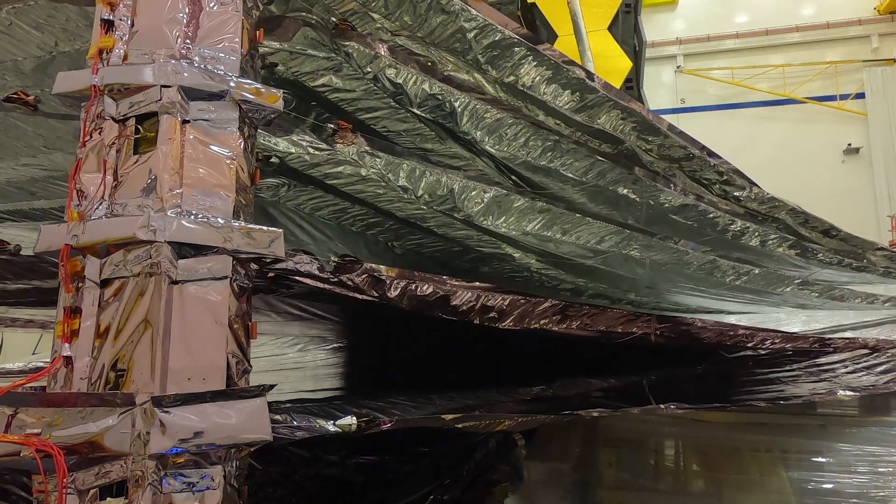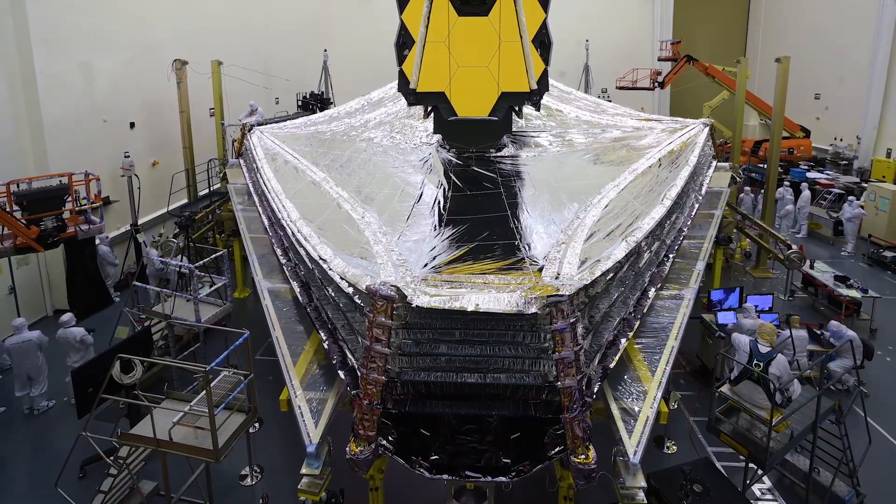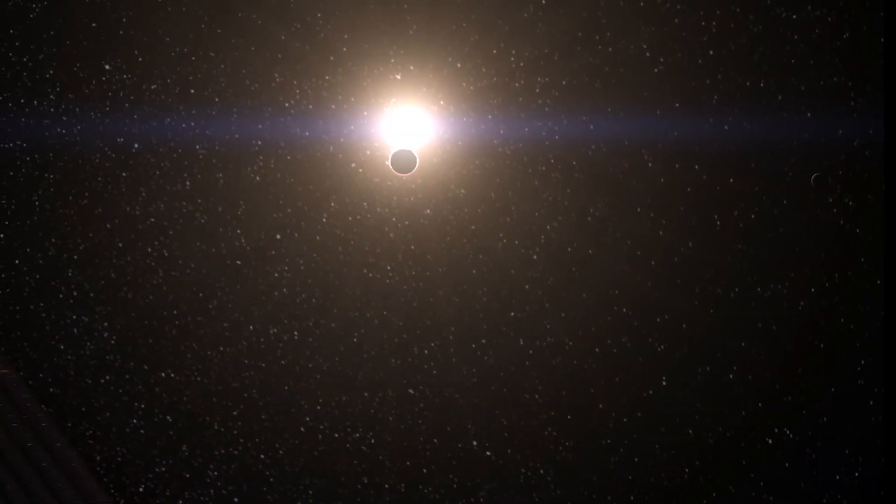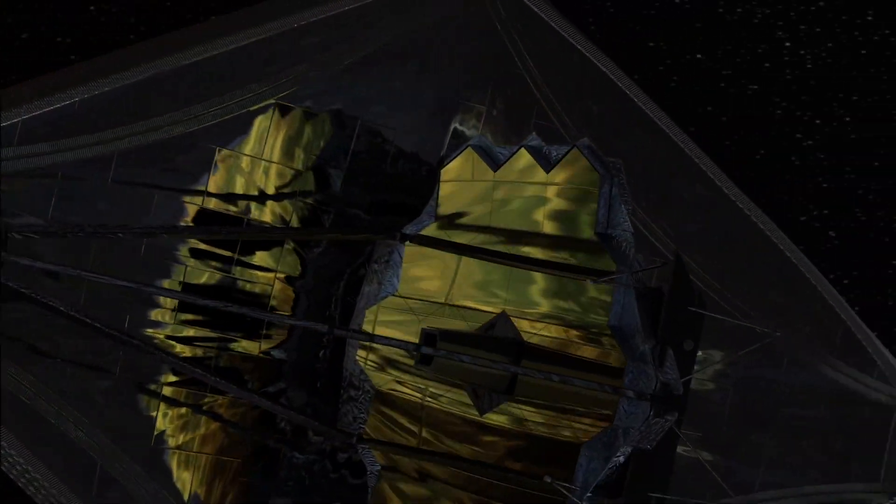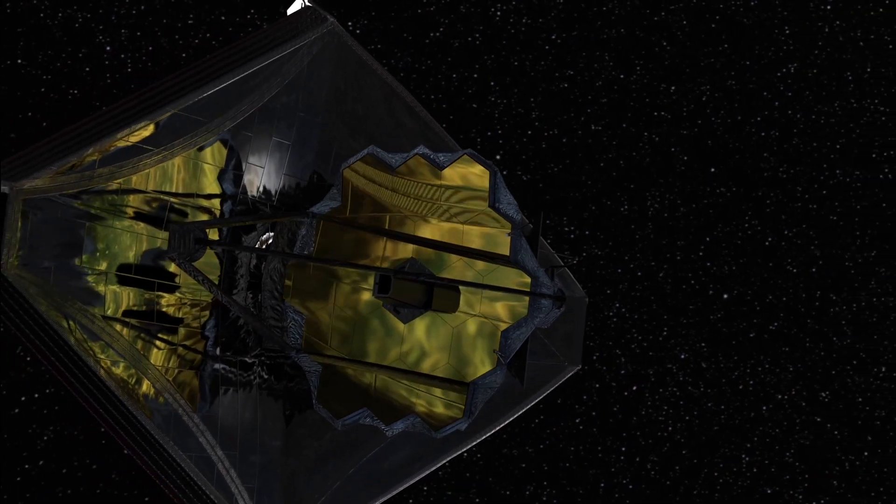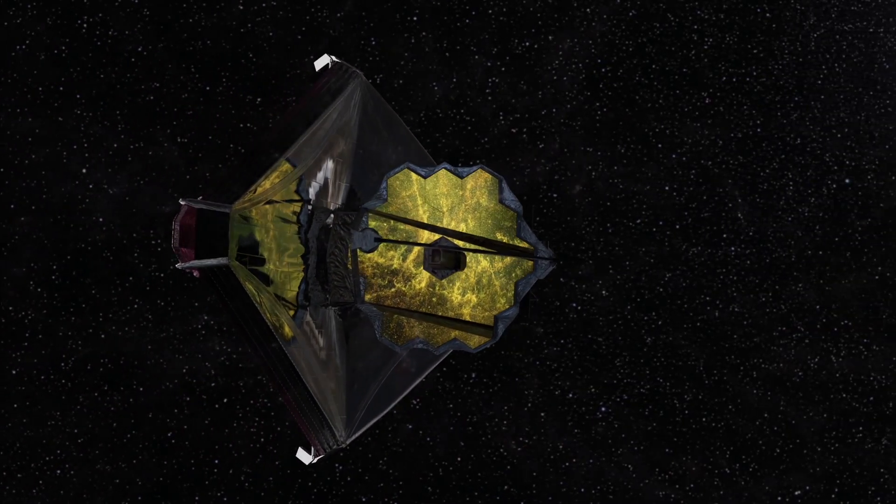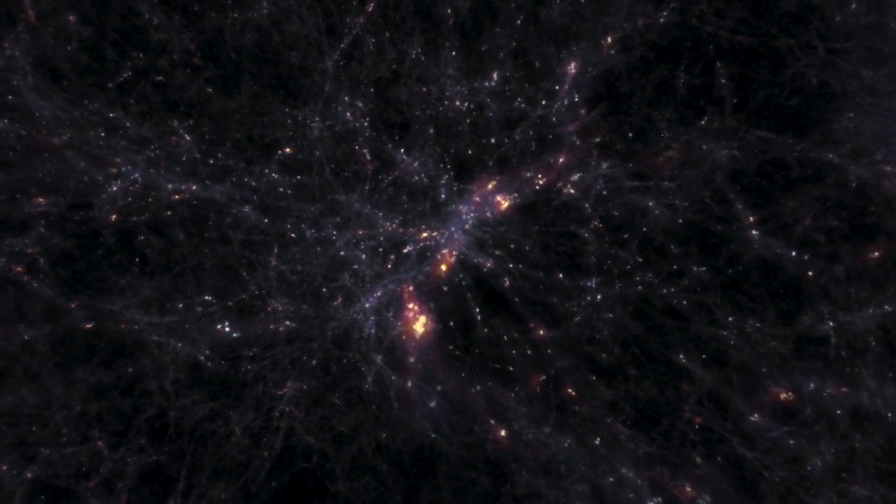Webb will also observe exoplanets located in their stars' habitable zones, the regions where a planet could harbor liquid water on its surface, and can determine if and where signatures of habitability may be present. Using a technique called transmission spectroscopy, the observatory will examine starlight filtered through planetary atmospheres to learn about their chemical compositions.